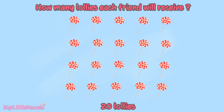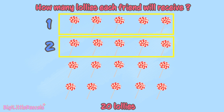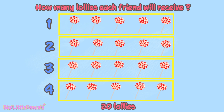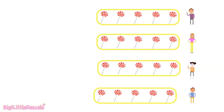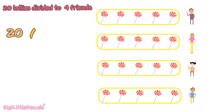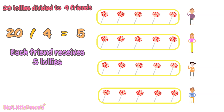Let's divide this into 4 groups. 1, 2, 3, 4. So how much is 20 divided by 4? So 20 divided by 4 is equal to 5. Correct! So each friend receives 5 lollies.